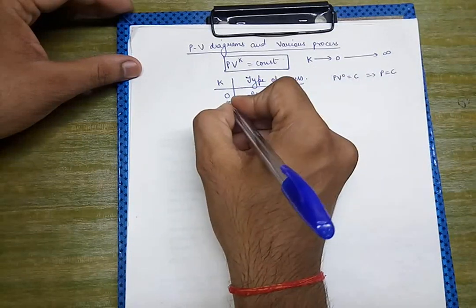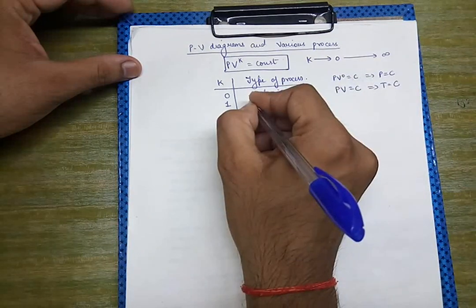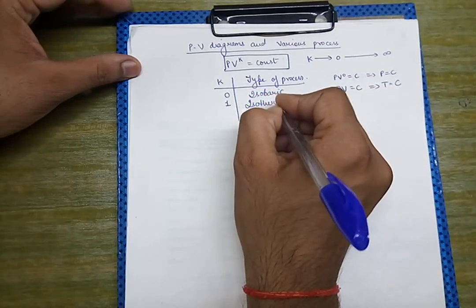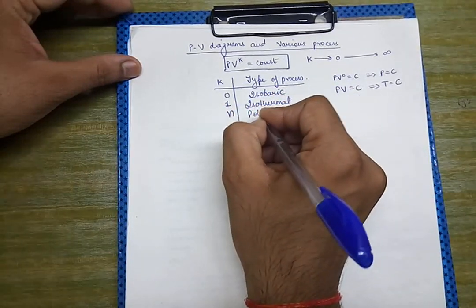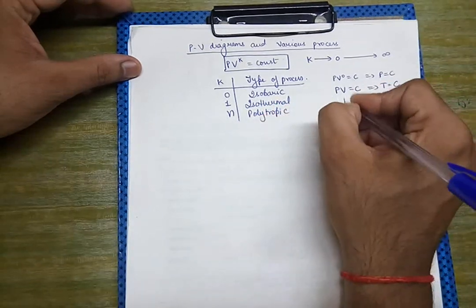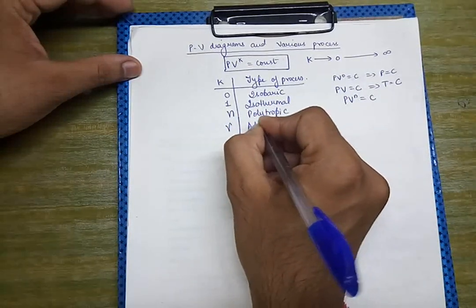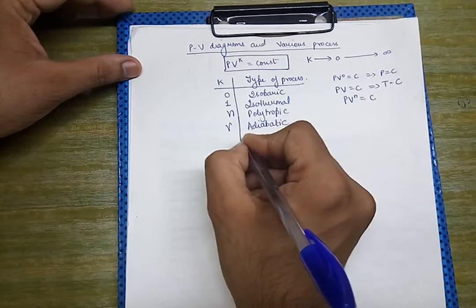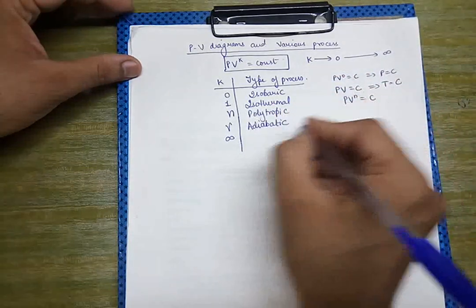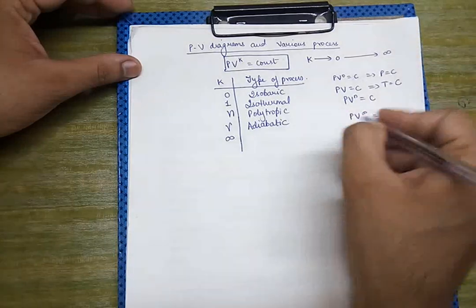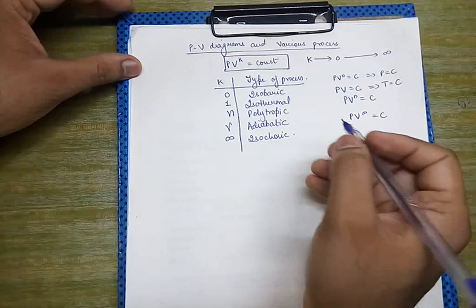If k = 1, then pv = constant and temperature is constant — this is the isothermal process. If k = n, this becomes the polytropic process, where pv^n = constant. If k = gamma, this is our adiabatic process. And if k = infinity, volume is constant, so the process is isochoric.